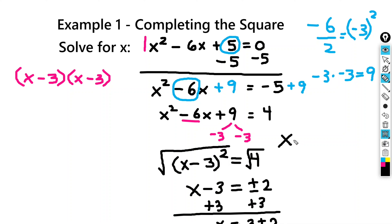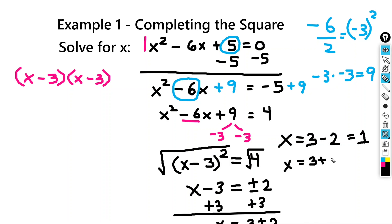So that represents two solutions. Our first solution: x equals 3 minus 2, which is 1. And our second solution: x equals 3 plus 2, which is 5. So our two solutions are x equals 1 and x equals 5, and we've solved that problem by completing the square.